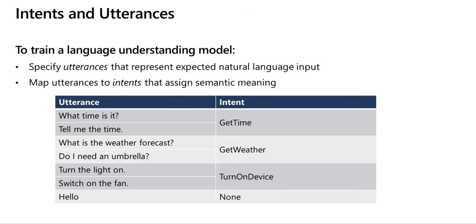The precision, consistency, and completeness of your label data are the key factors in determining model performance. Label precisely — label each entity to its right type and only include what you want to be extracted, avoiding unnecessary data in your labels. Label consistently — the same entity should have the same label across all utterances. And label completely — label all instances of the entity in your utterances.